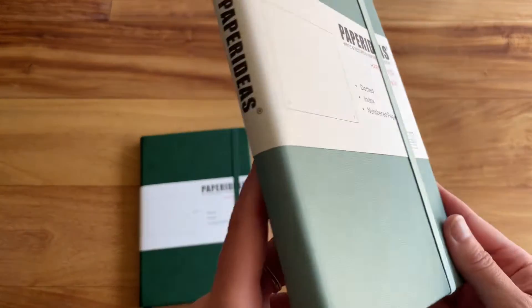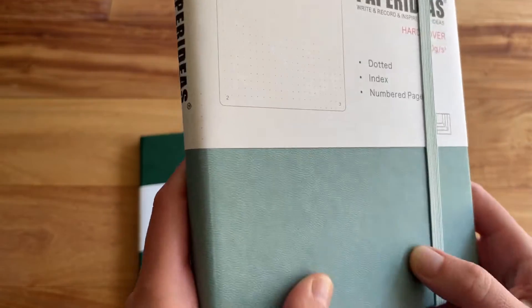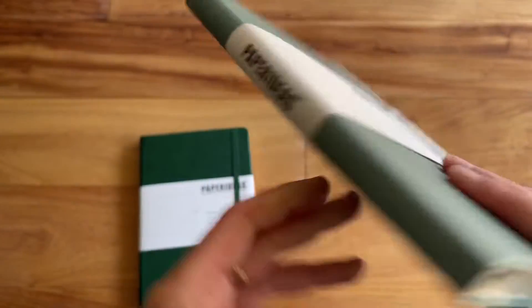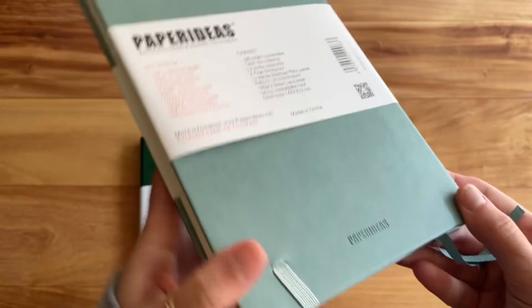Alright, this is it. Hardcover has a really nice soft texture to it. It's leatherette cover. And then here's the spine and then the back.